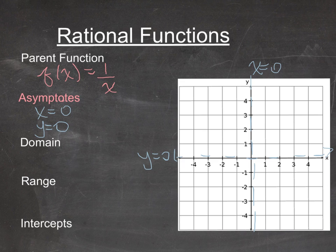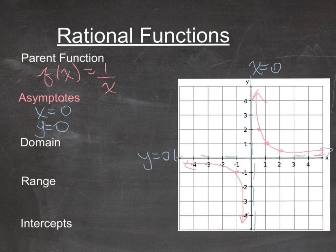Now plotting the function using a quick mental table of values: when x = 1, f(1) = 1; when x = 2, f(2) = 1/2; when x = 1/2, f(1/2) = 2. That gives a curve in the first quadrant. For a negative value, when x = −1, f(−1) = −1, and the image mirrors into the third quadrant. The ends of each piece of the graph approach those asymptotes but never actually touch them.